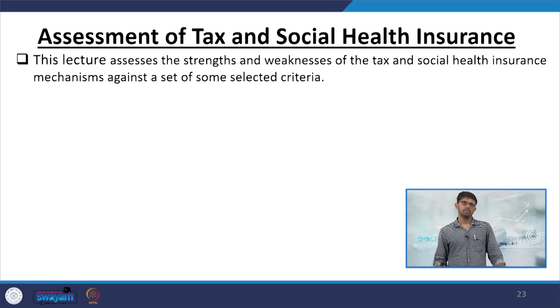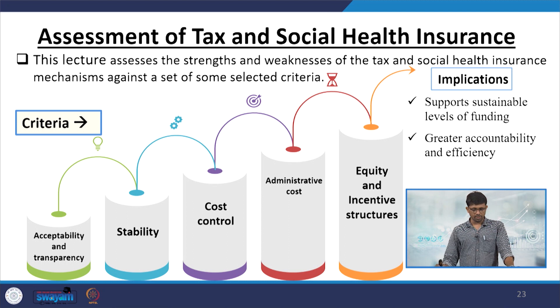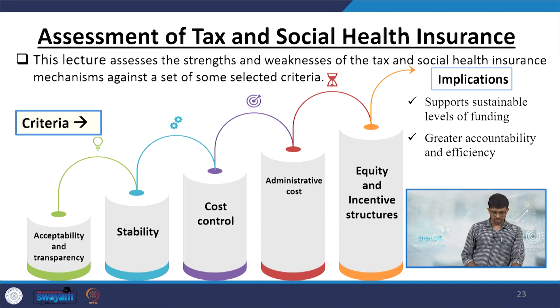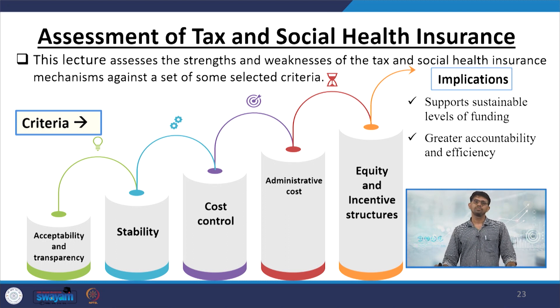We have mentioned that tax and social health insurance schemes are considered to be the better practices across the globe. In our previous lecture, we emphasized social health insurance and the incidence or burden of who is sharing the burden of those social health insurance contributions. The assessment of all these things is made through five important criteria. We already discussed acceptability, transparency, and stability of insurance sources, explained through demand and supply framework using marginal value of labor and labor supply.